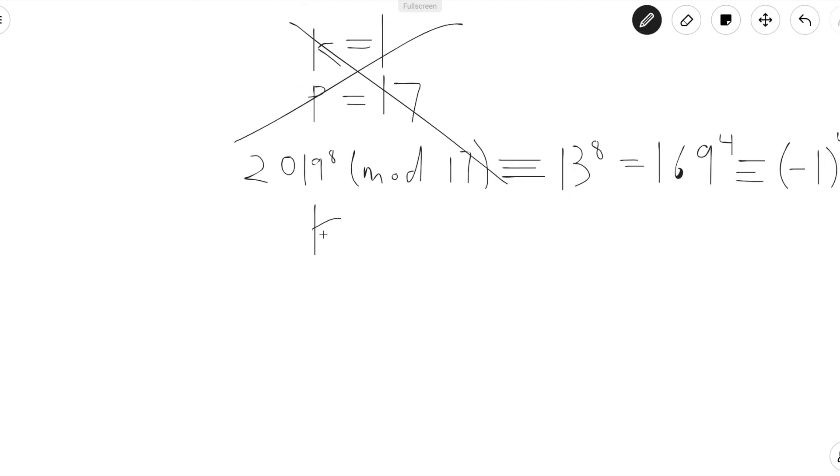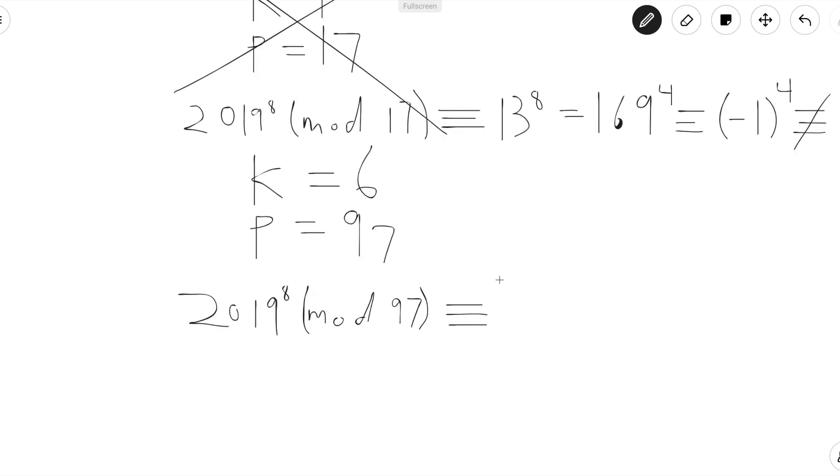So when k equals 6, we get that p equals 97. We want to see what 2019 to the 8 is mod 97. And if this is congruent to negative 1, then we're done. We can stop here and we've finished problem 14 in less than 5 minutes. 2019 mod 97 is equal to 79. So this is congruent to 79 to the 8.